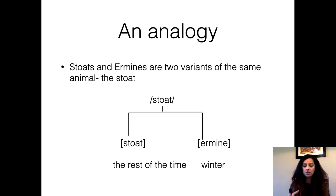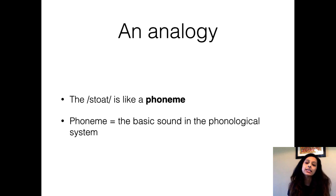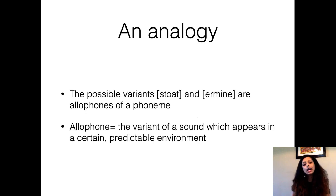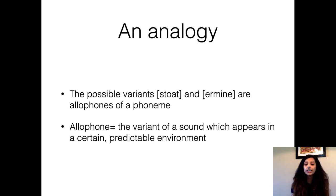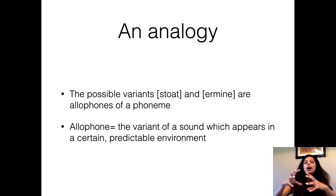The analogy in phonology with respect to the stoat and the ermine is that of a phoneme. A phoneme is a basic sound in the phonological system — it is a speech sound that is also the basic unit of the phonological system. The two different variations of the phoneme are called allophones. An allophone is a variant of sound which appears in a certain predictable environment, just like the ermine appears in winter.